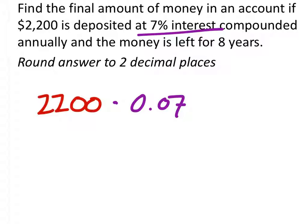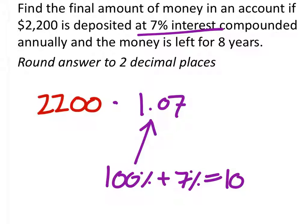However, what we really want to do is just take that and multiply it by 1.07. The reason that is is because when we add that 7% on to the original amount, it means that we have the original amount, which is 100%, plus the 7%, which is 107%. So that's where this comes from, 1.07.